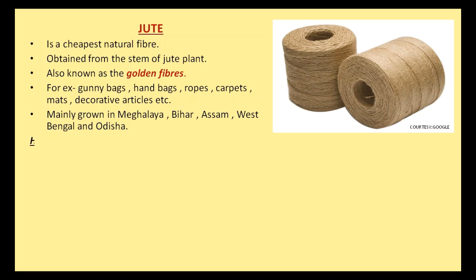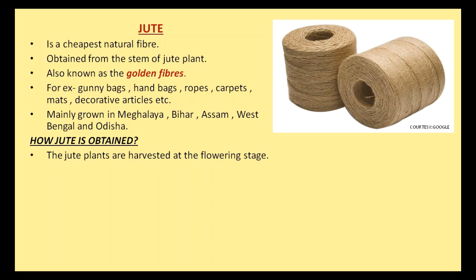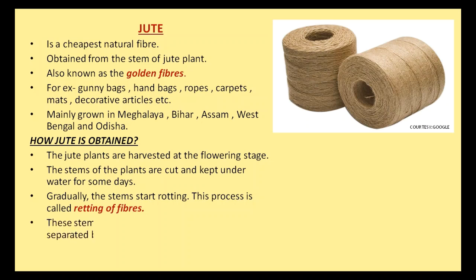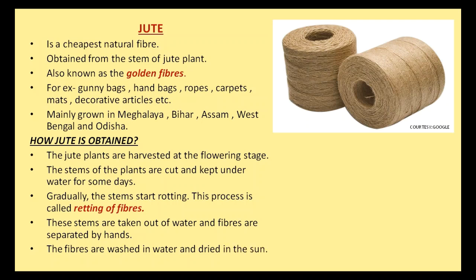Jute is mainly grown in Bihar, Assam, West Bengal, and Odisha. How is jute obtained? The jute plants are harvested at the flowering stage. The stems of the plants are cut and kept under water for some days. Gradually the stem starts rotting — this process is called retting of fibers. The stems are then taken out of water and fibers are separated by hand. The fibers are washed in water and dried in the sun.